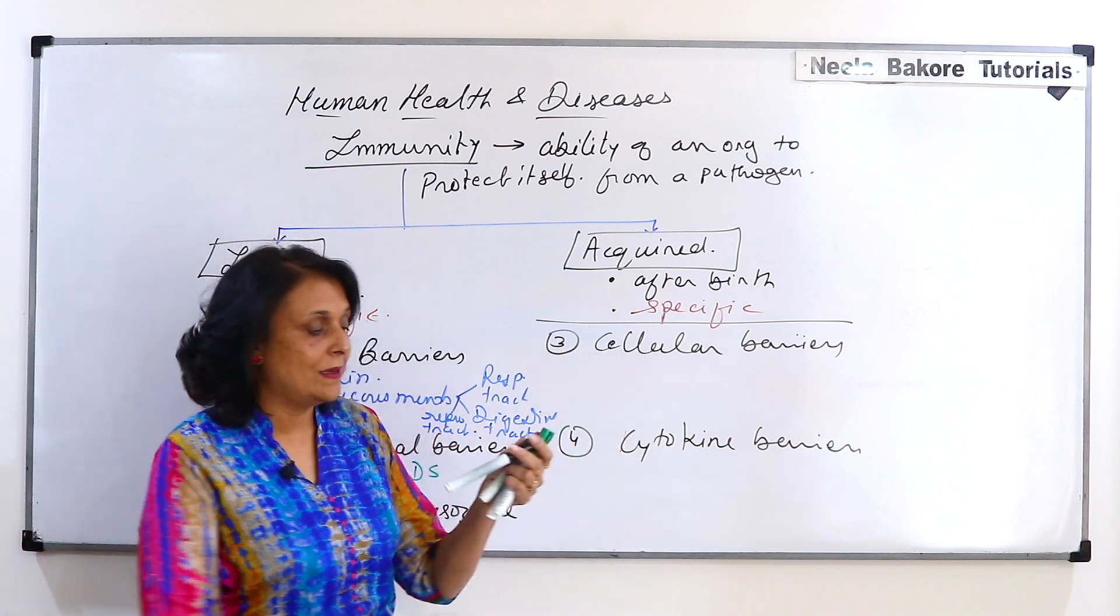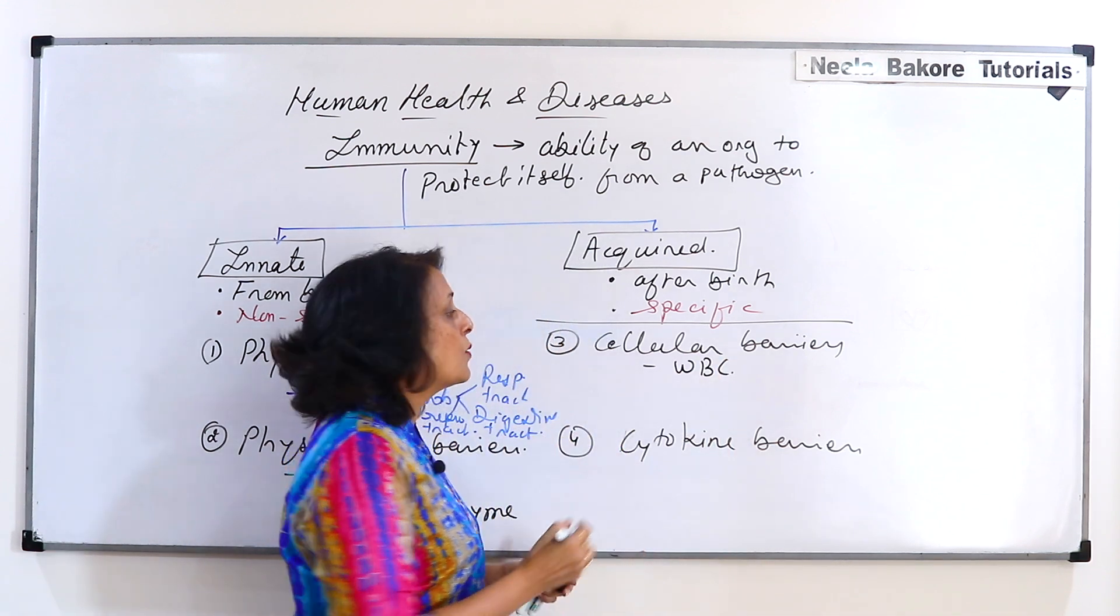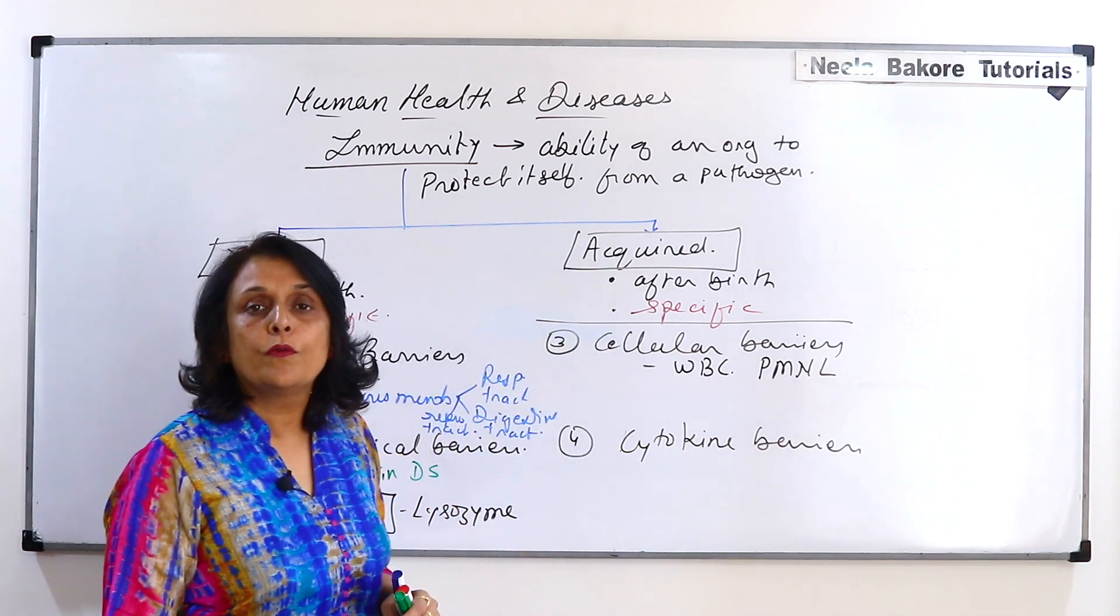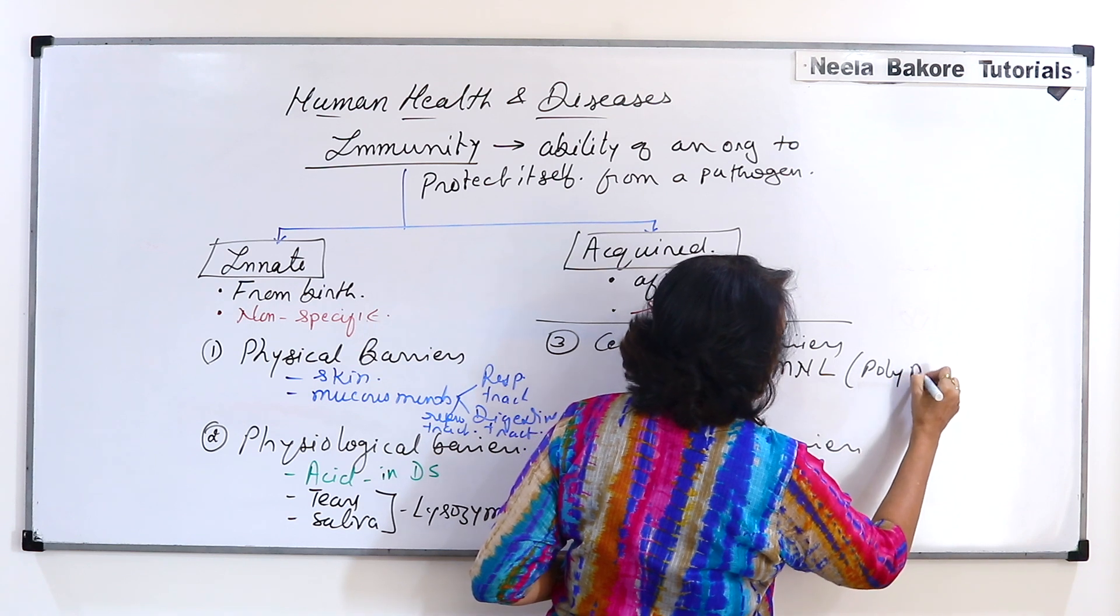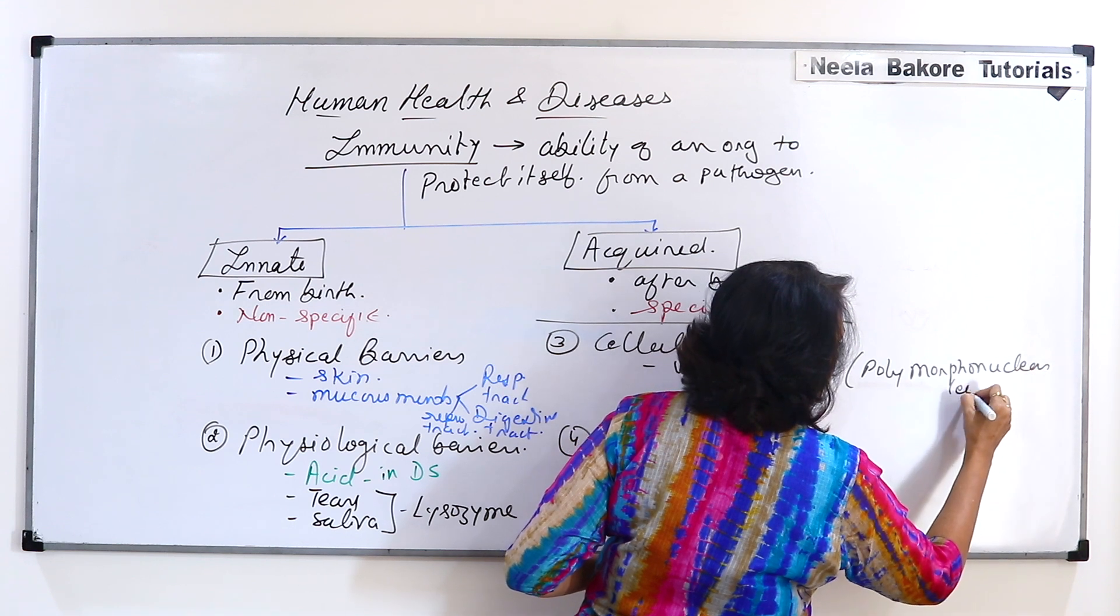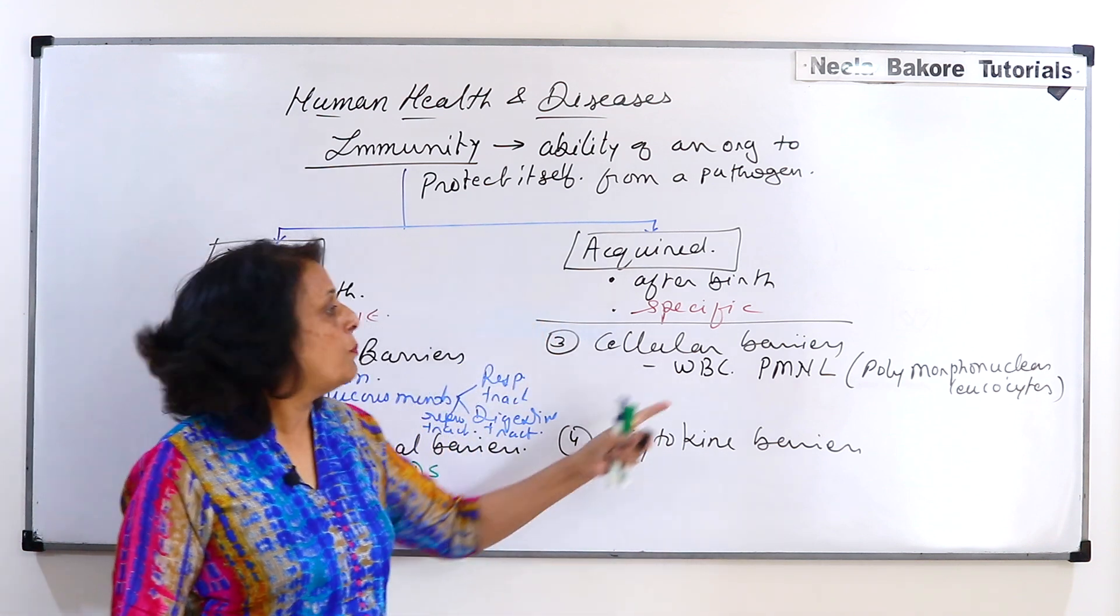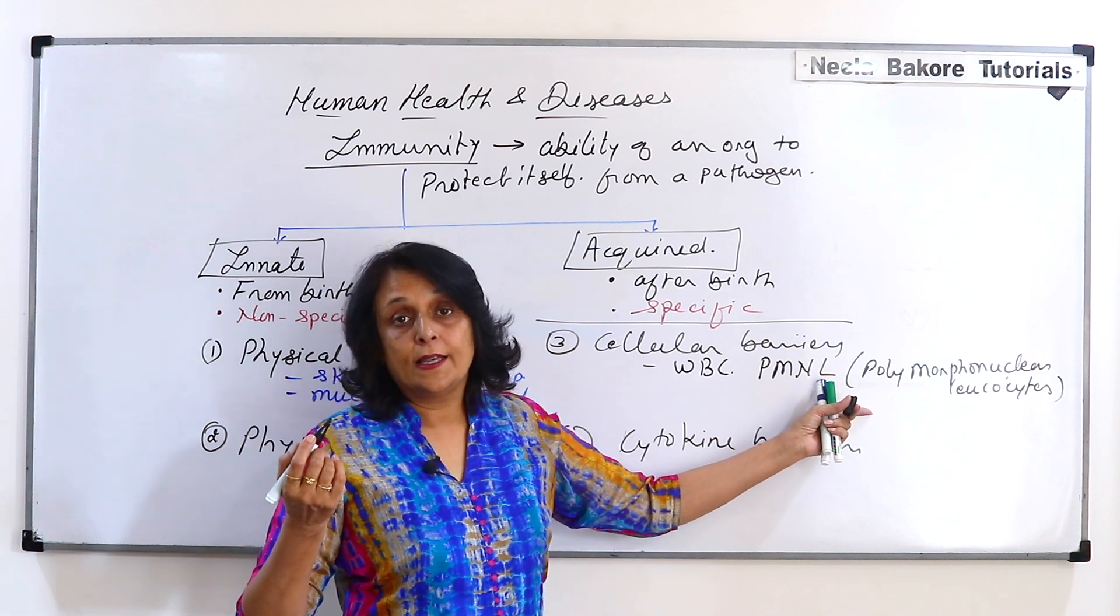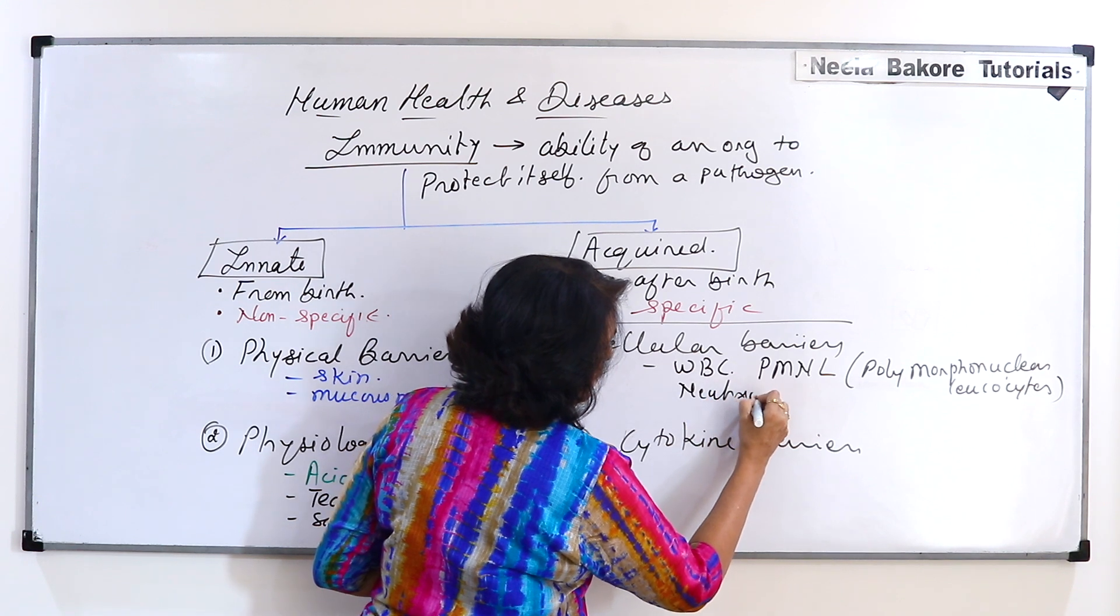So there are cells like our WBCs which are called polymorphonuclear leukocytes. And when we talk of these polymorpho that means we are mainly talking about the soldiers, that is neutrophils.